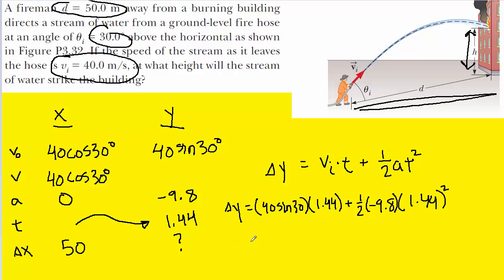Once those values are plugged in, we can go ahead and compute the result. And that ends up being the y direction displacement, which is the height of the building.